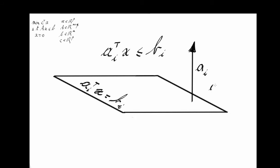From a geometrical point of view, all points which are above this hyperplane — meaning in the direction of the normal vector — verify the inequality A_i transpose X greater or equal to B_i. All points which are below the hyperplane, meaning in the opposite direction of A_i, verify the inequality A_i transpose X less or equal to B_i, which is exactly our constraint.